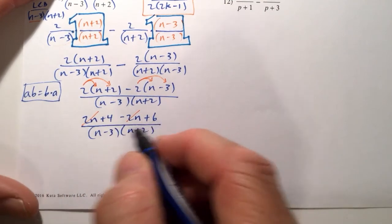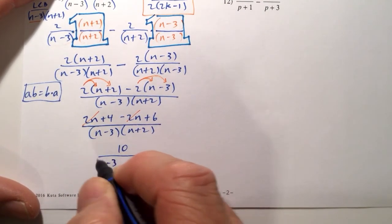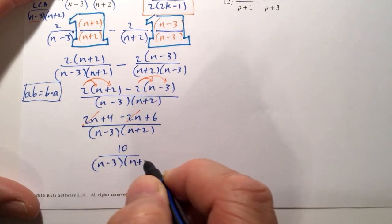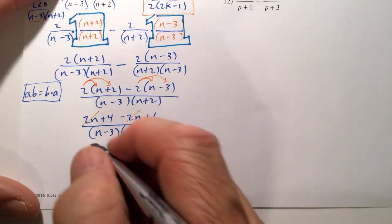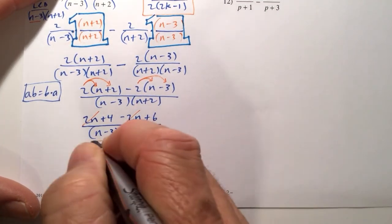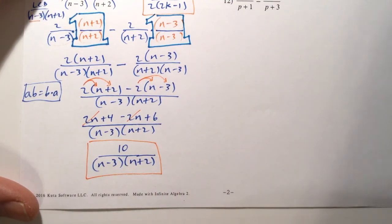And we have 4 plus 6, which is 10, all over the quantity n minus 3 times n plus 2. And we cannot cancel any more. Don't even think of canceling the 10 and the 2. And that is it.